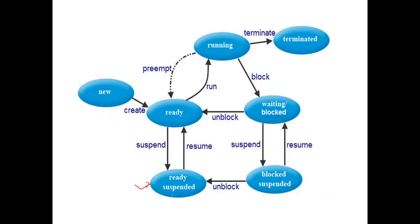Now let us see the next state — the ready suspended state. The ready suspended state is a place in secondary memory where processes wait. Some processes will be moved from the ready state to the ready suspended state. There are situations in which processes have to be moved from ready state to ready suspended state. In the ready state, processes wait for their chance for execution.